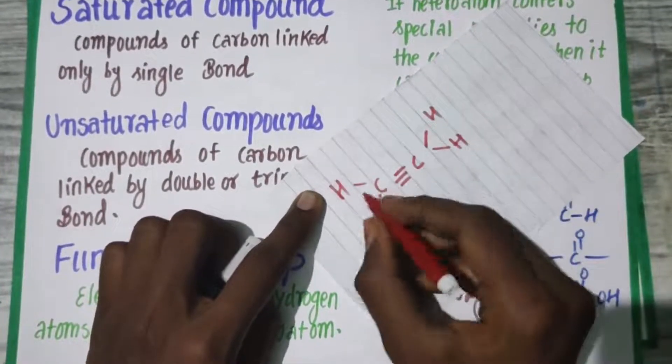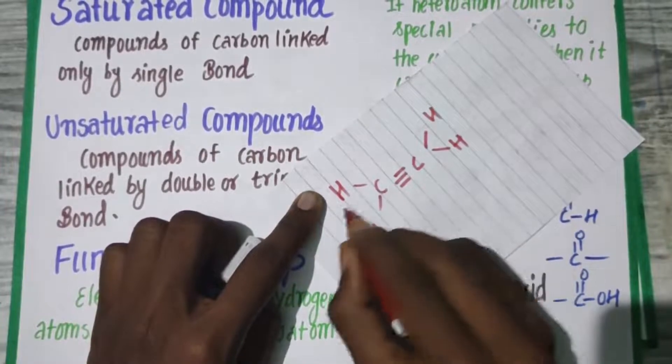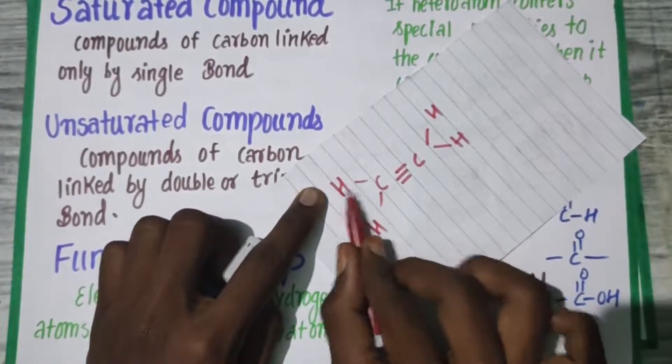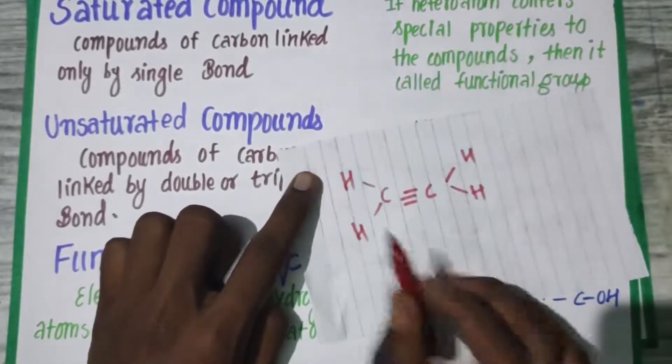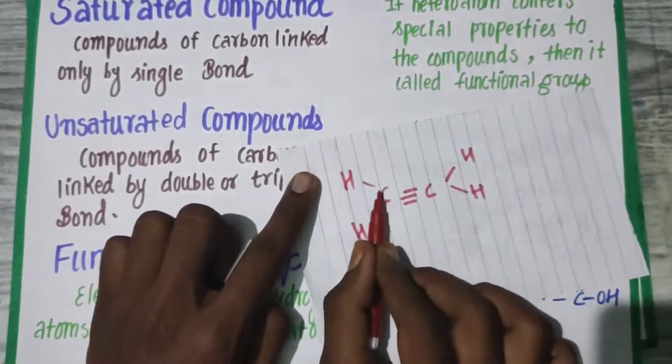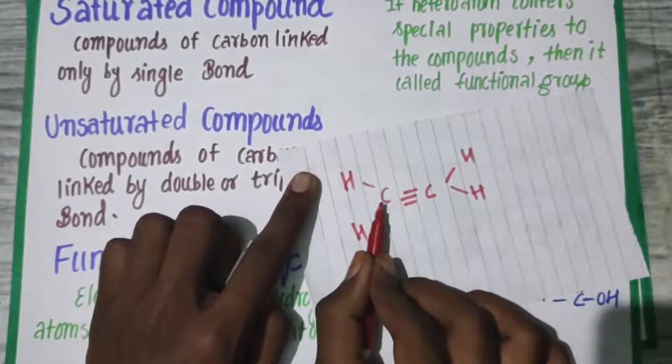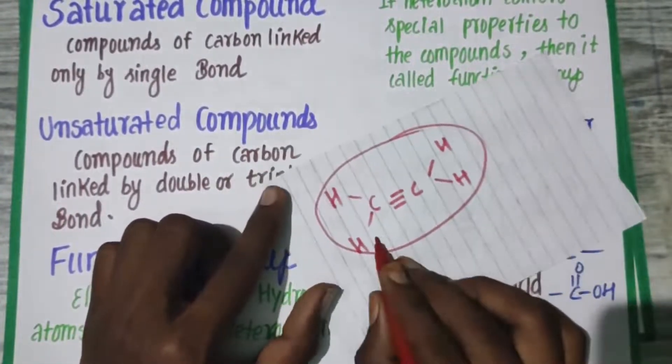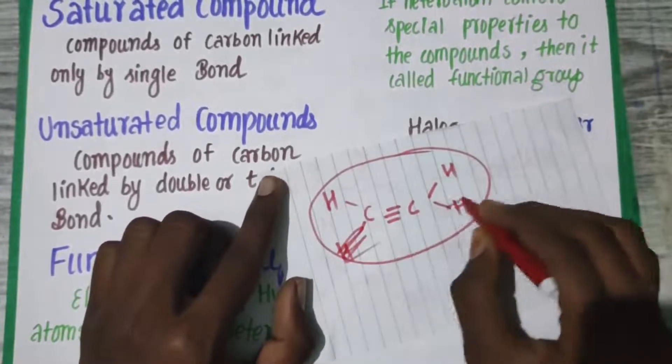Each bond indicates that there are two electrons these two elements are sharing. So this is an example—actually, here you should not put two hydrogens, only one hydrogen.